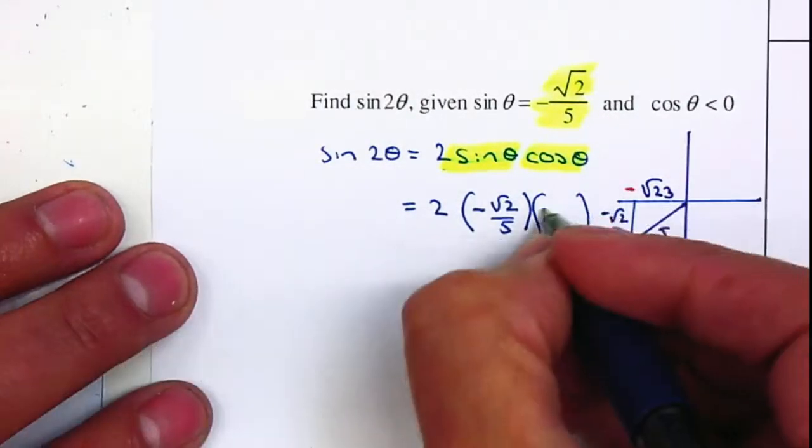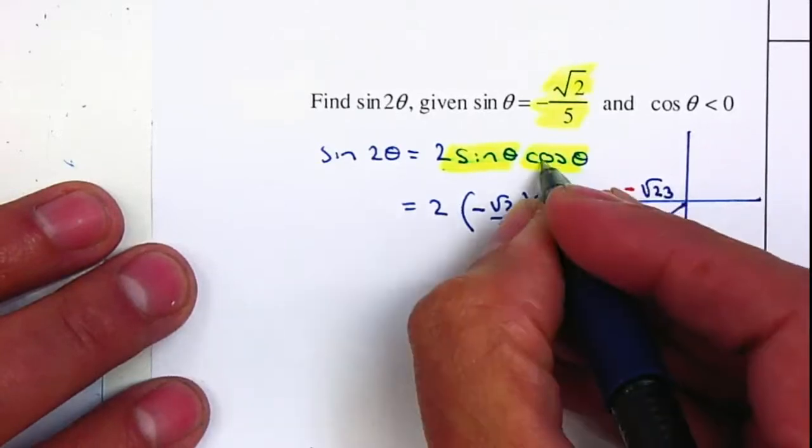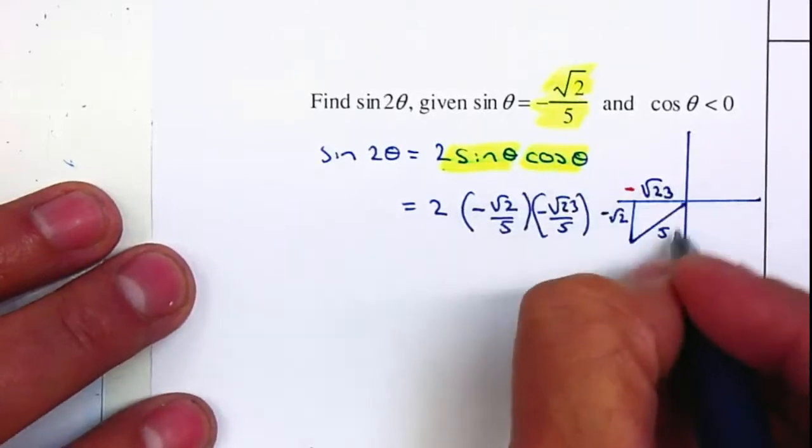So therefore, this will be negative square root of 23 divided by 5. Cosine will be your adjacent over hypotenuse.